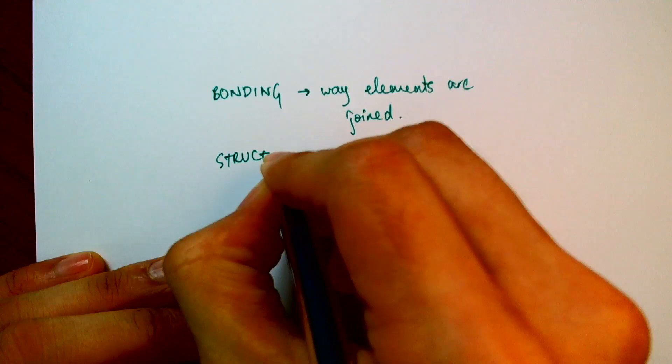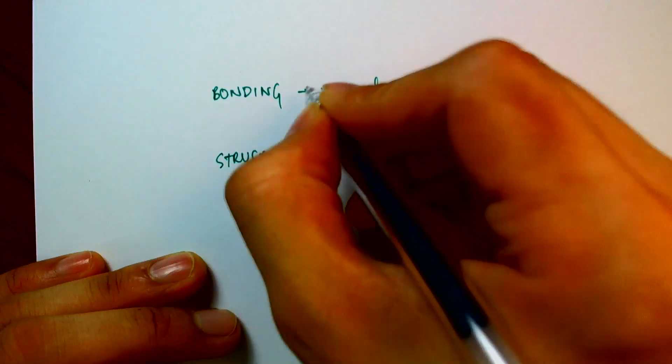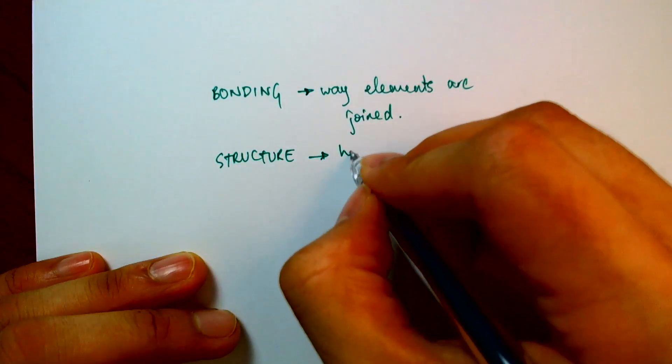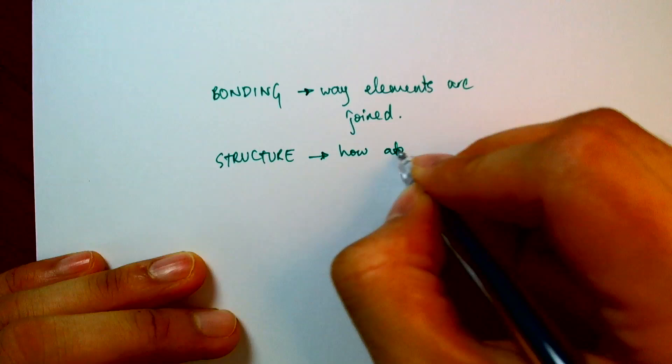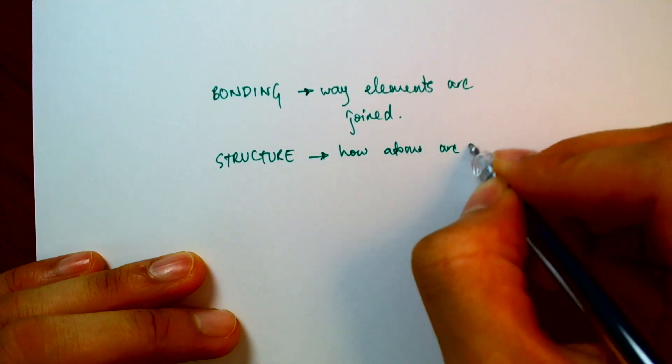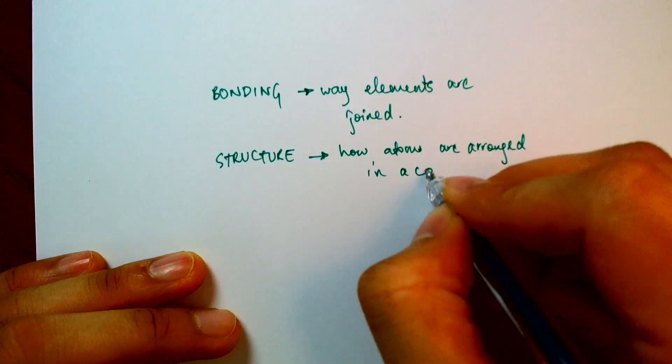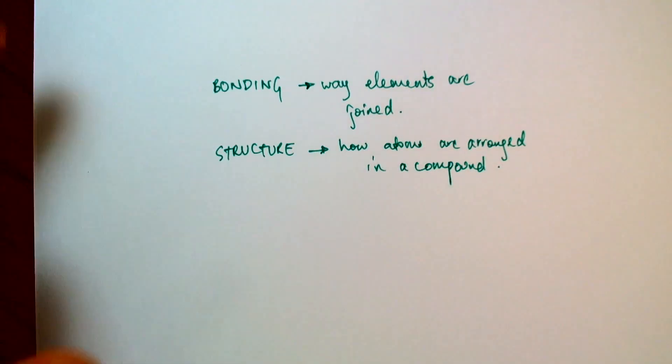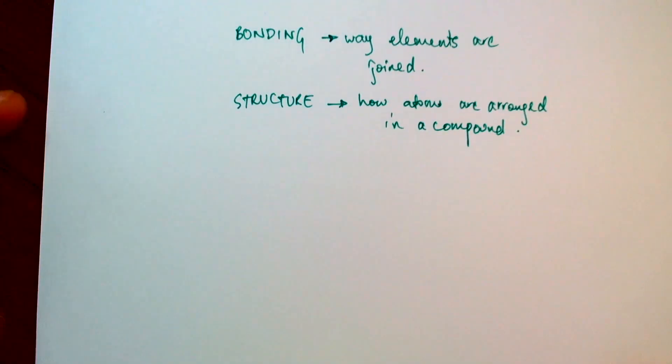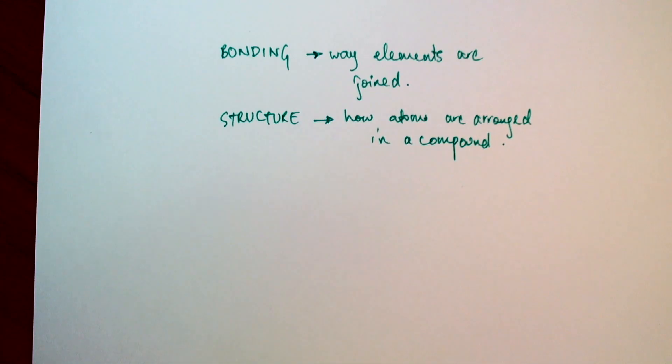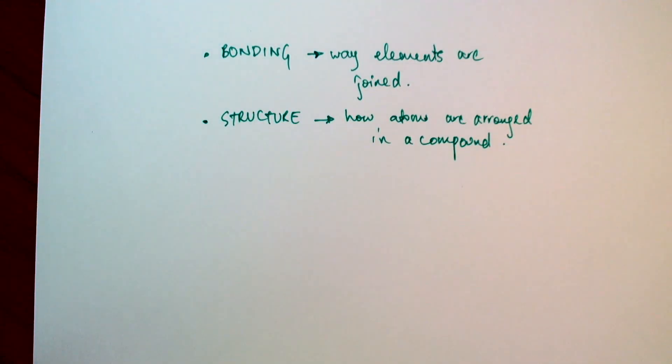they could be arranged in special ways. So structure is a look at how the atoms are arranged in a compound once they have been joined together. So as we go along here, looking at putting elements together to form compounds, these are the two main ideas that we will be looking at. We'll be looking at their bonding, and we'll be looking at their structure.